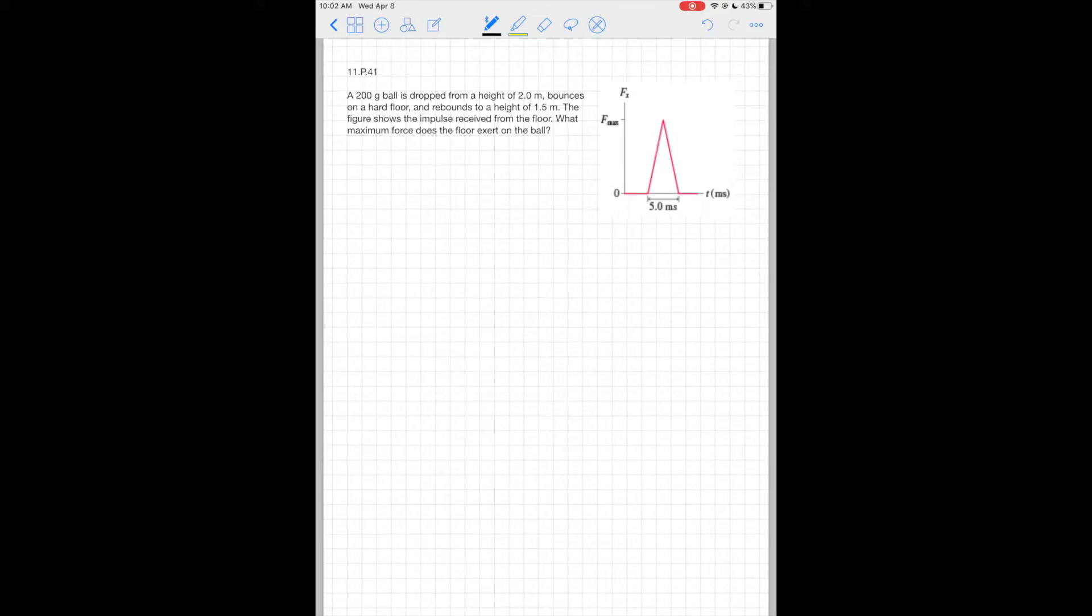It reads: a 200 gram ball is dropped from a height of 2 meters, bounces on a hard floor, and rebounds to a height of 1.5 meters. The figure shows the impulse received from the floor.